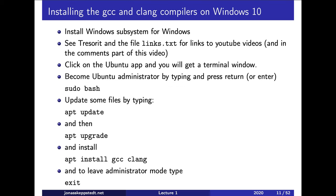The first and biggest problem when we start a new language is to get the compiler running. It should not be so complicated, but if you have Windows, you can either use an existing C compiler if you already have one, or you can install something called the Windows Subsystem for Linux. Then you can run Linux commands in a terminal window, and that's the easiest way to use the C compiler on Windows.